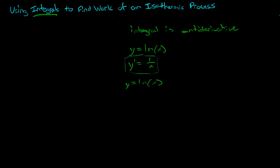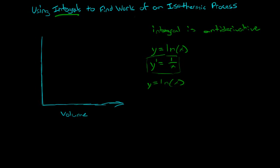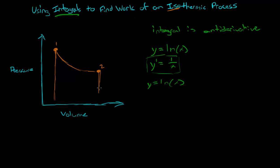On a PV diagram, for a process of a gas — here's the y-axis, the x-axis is the volume, and the y-axis is the pressure. If we want to find the work done as the gas goes from state 1 to state 2, the curve has a hyperbolic shape because the temperature stays the same in an isothermal process. The work is the shaded area underneath that curve.